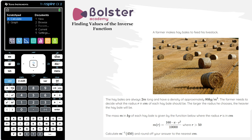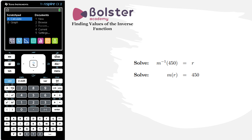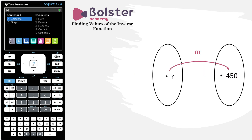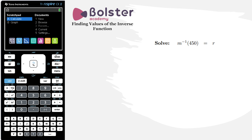The question asks us to calculate m inverse of 450 and round off the answer to the nearest centimeter. The key to this question is realizing that to solve m inverse of 450, we just need to solve the equation m(r) = 450. m is taking the input r and outputting 450, so the inverse function will take 450 as an input and output r, the original value we put into m. The main takeaway is that if we want values of our inverse function, we just need to solve equations of the original function — and that's easily done on our calculator.